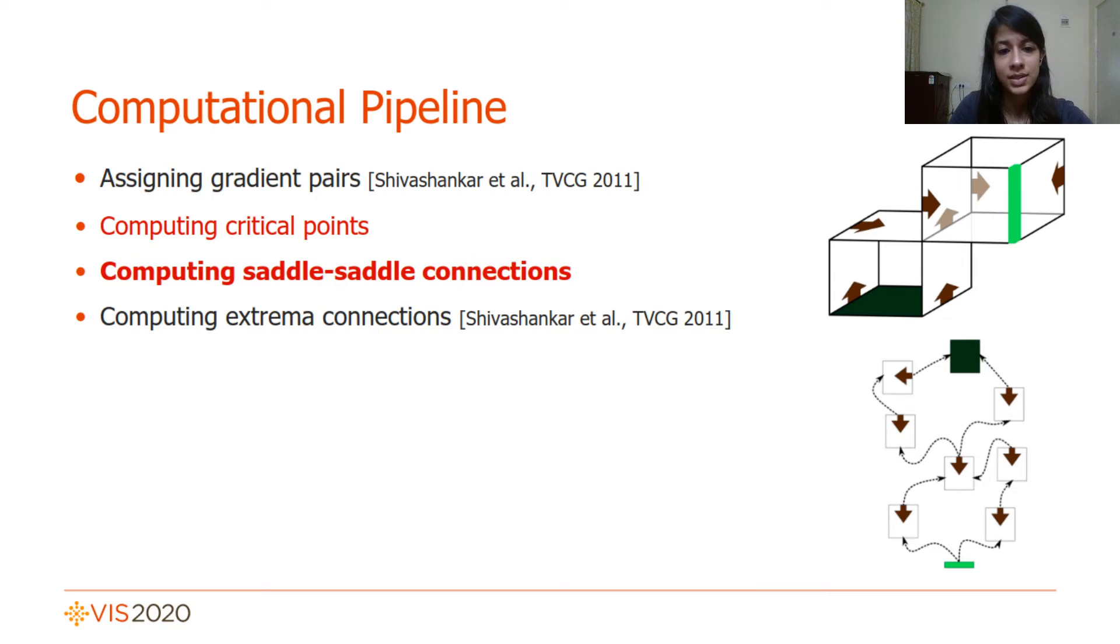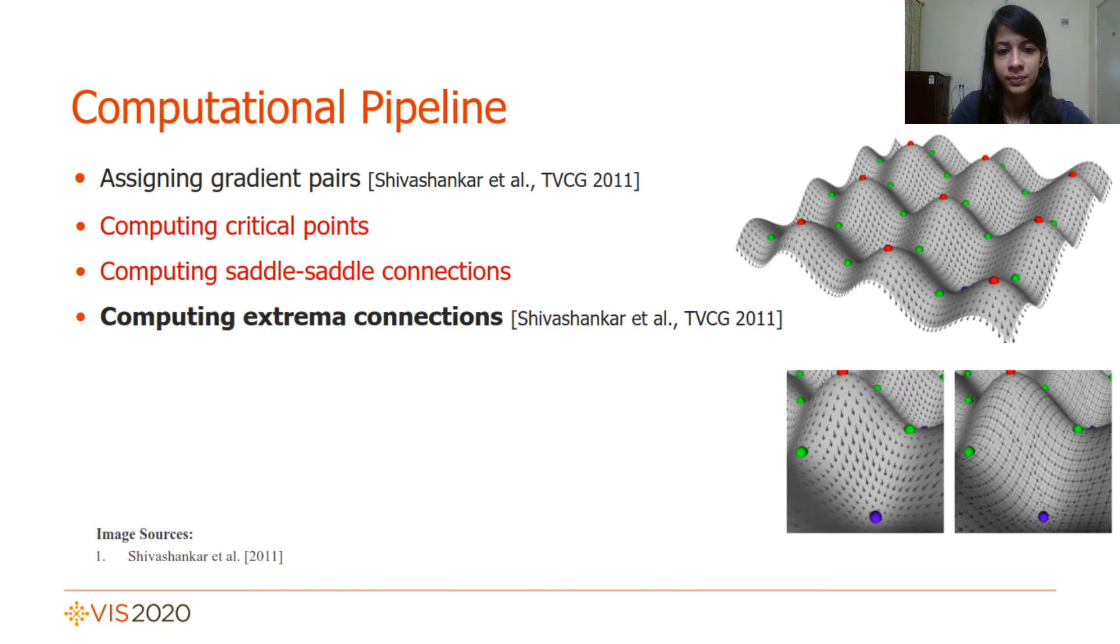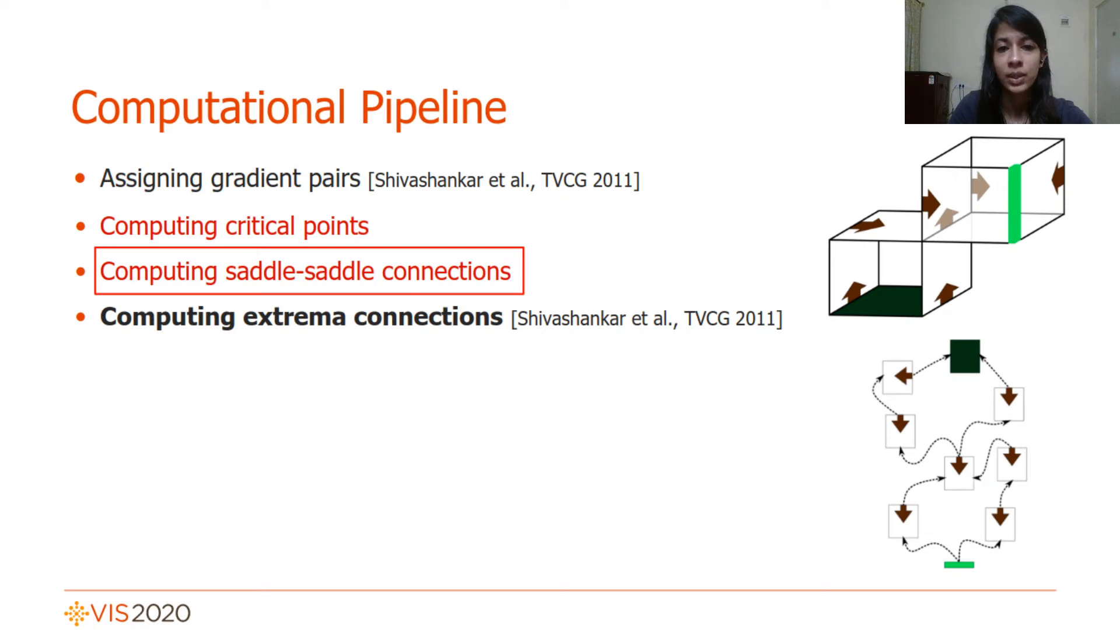The third step, which is the primary bottleneck in existing approaches, involves the computation of saddle-saddle connections. The fourth and final step computes extrema connections in parallel, which we again borrow from Shivshankar et al. In this work, we incorporate incremental improvements to step 2 and focus the bulk of our attention on step 3, which poses the biggest challenge in terms of performance.